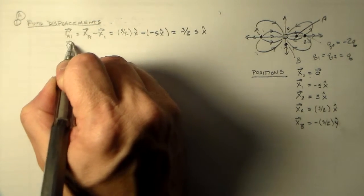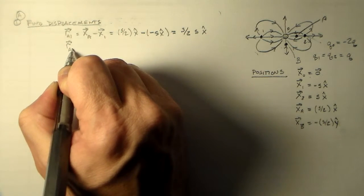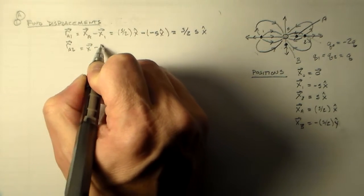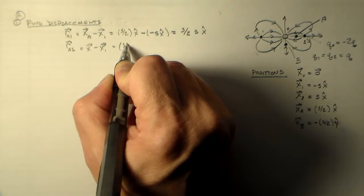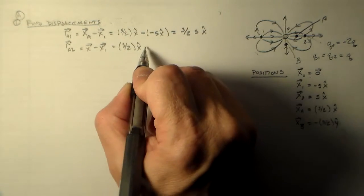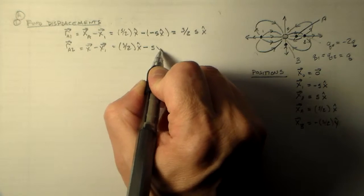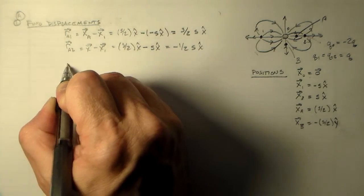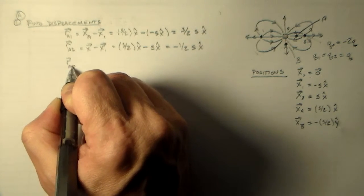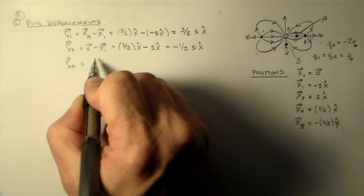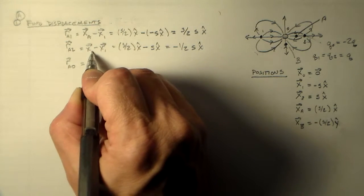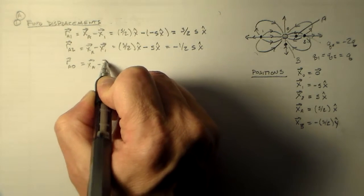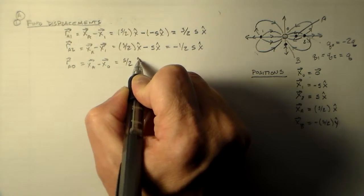Very good. And now, from 2 to A, we have xA minus x2. In this case, we have a positive sign here. So we have minus s x hat, and we just have minus 1 half s x hat. And finally, from 0 to A, 0 is just at 0, so we're not going to have much in the way of subtraction. We just have s over 2 in the x hat direction.